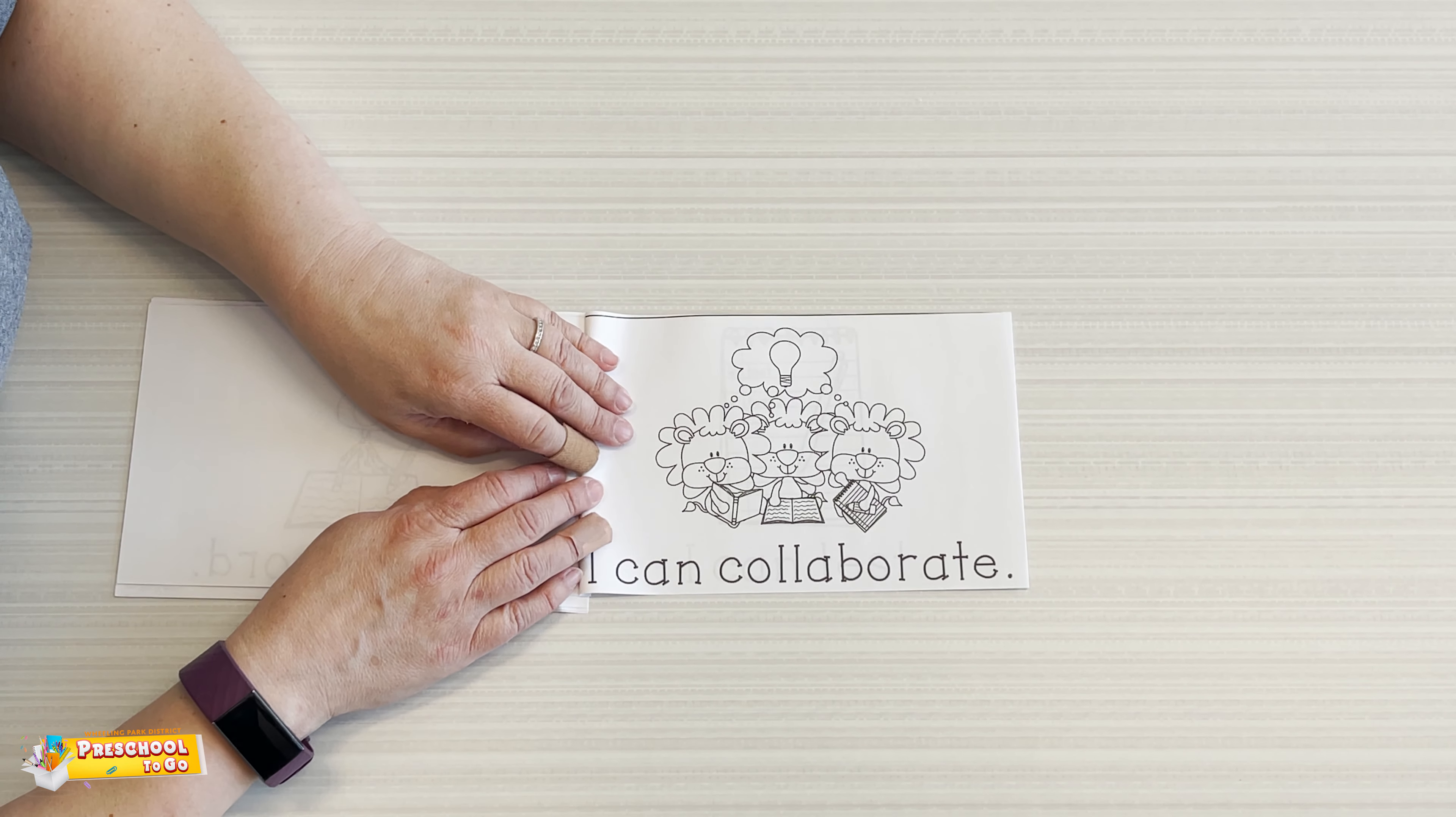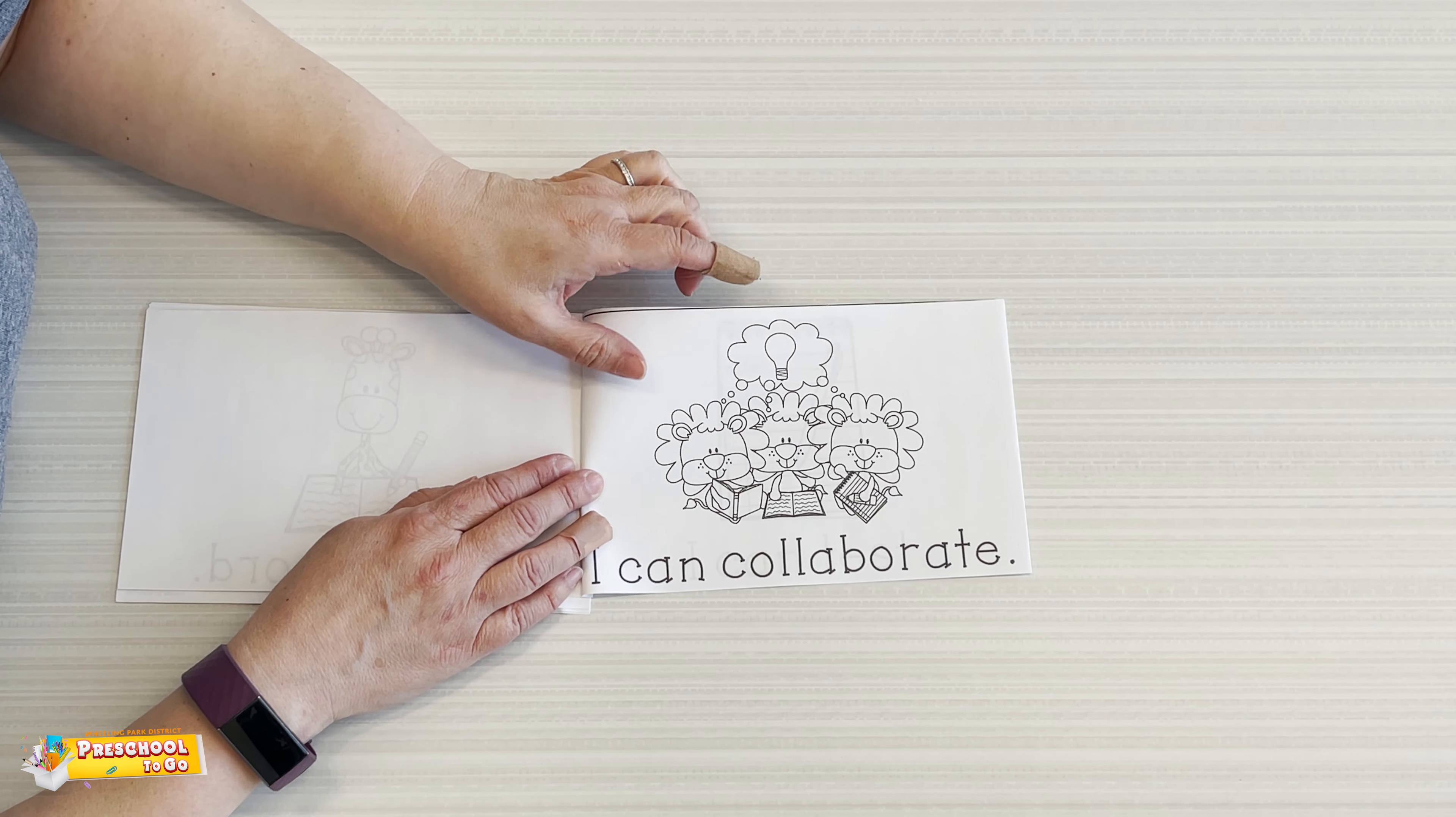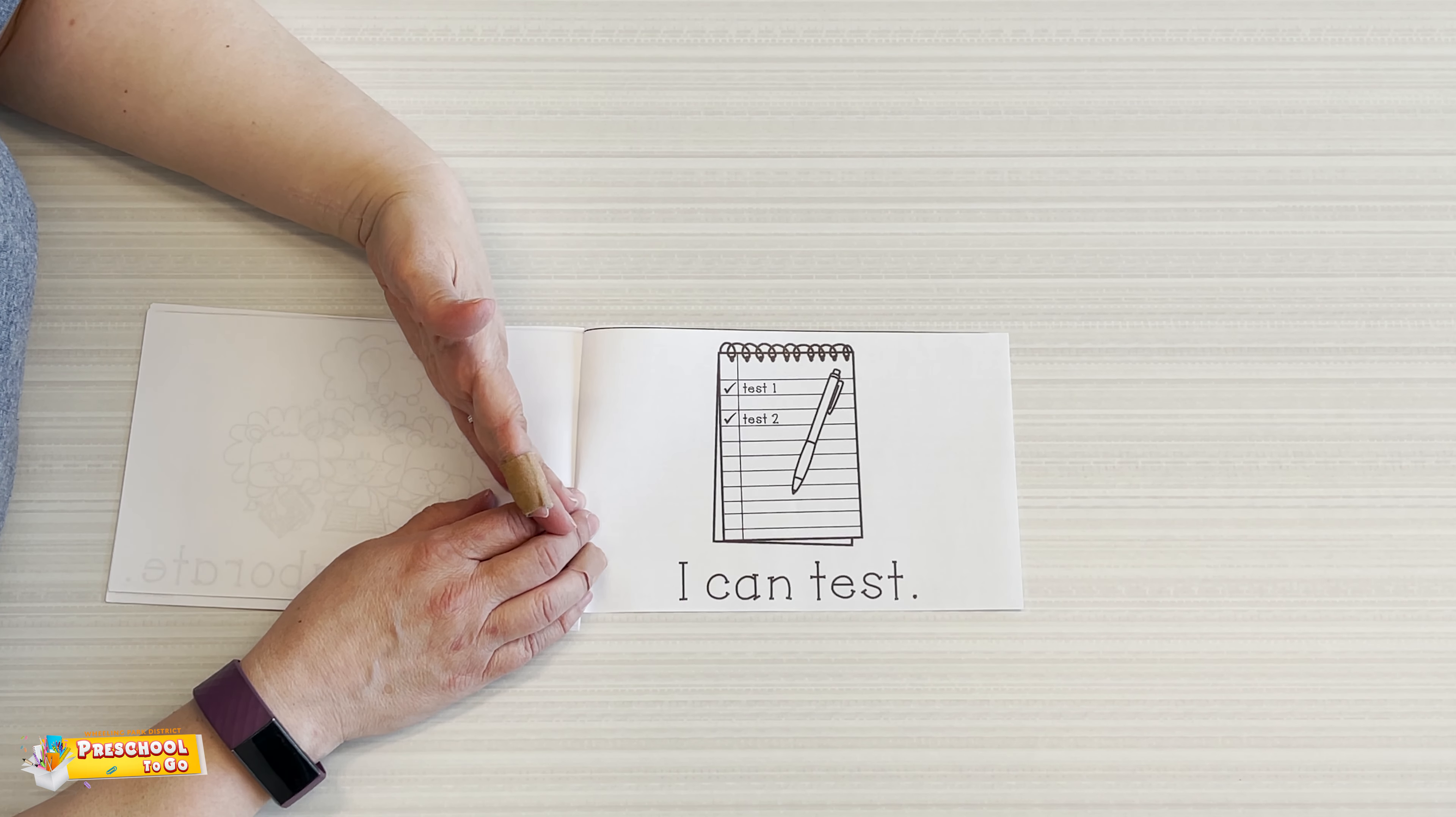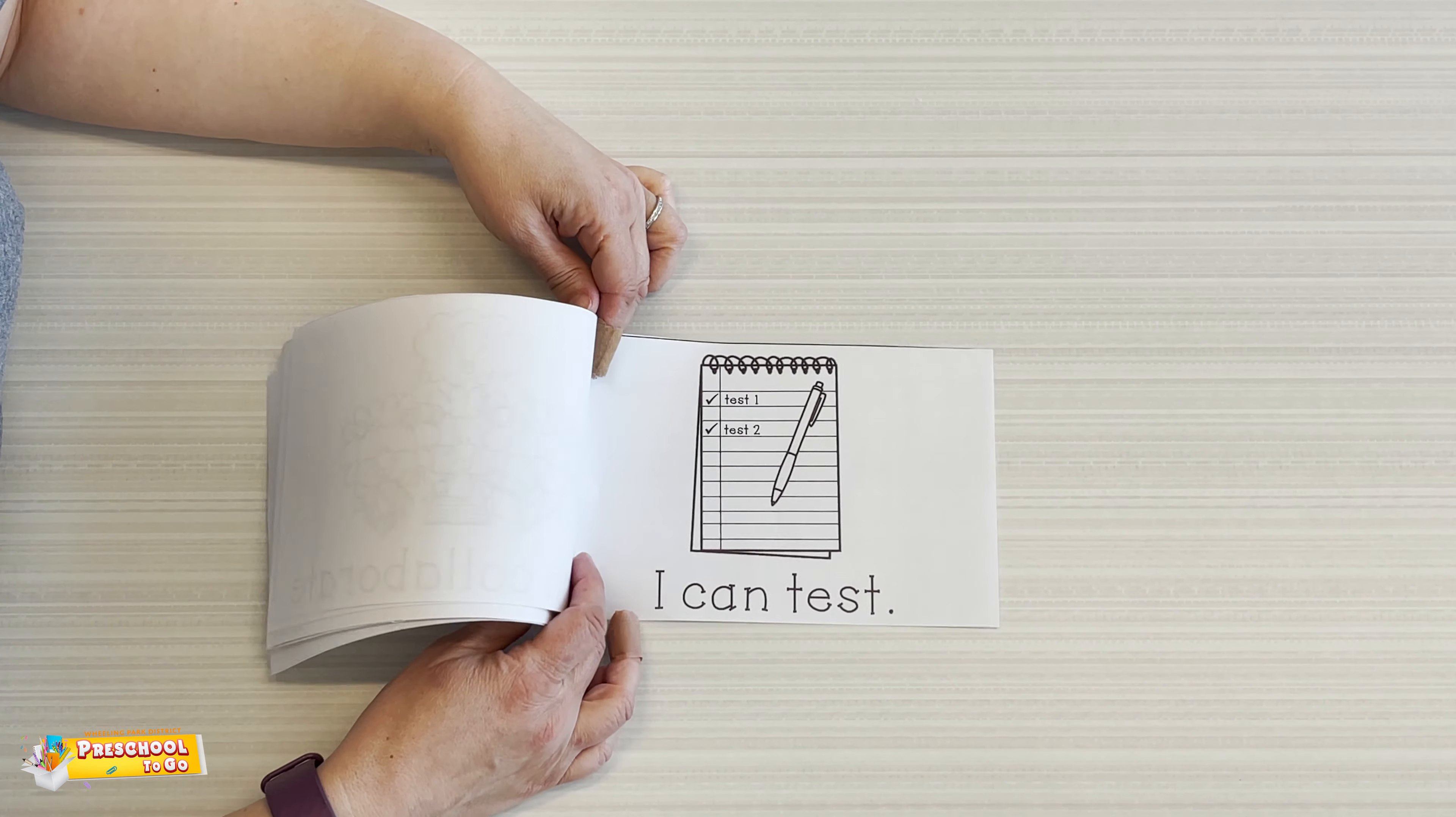I can collaborate. Collaborate means you work with other people. So it can be you with one person or two people or a whole group. And I can test means try it out to see what happens. Will it work? Will it not work? Sometimes things work and sometimes they don't. But that's how we learn is by checking it out. That's what a scientist does.